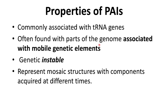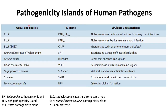These pathogenicity islands are quite genetically unstable and they represent mosaic structures with components acquired at different times. These sets of genes represent mosaic-like structures because different sets of genes responsible for different virulence traits are acquired at different times — all sets may not be acquired at the same time.